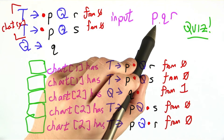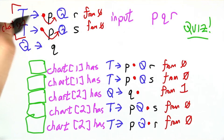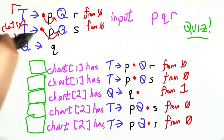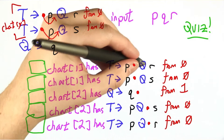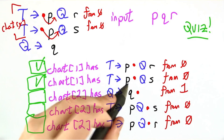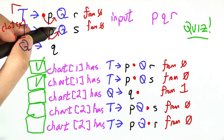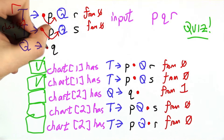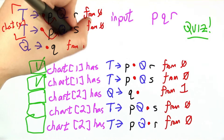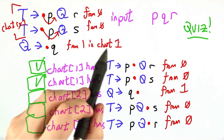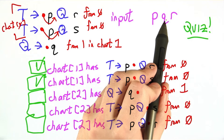That's super convenient. So we're going to move these dots over and get t goes to p.qr and t goes to p.qs from 0 in chart state 1. So both of the first two are correct. Now we're going to have dots in front of the q, so we're going to bring in q goes to .q from 1 in chart position 1. Now we're going to look at the input again and see that the next token is actually q.